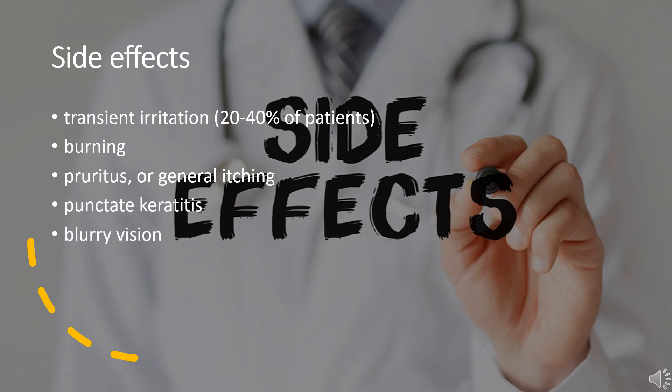Side effects: The adverse side effects of betaxolol can be categorized into local and systemic effects. The local effects include transient irritation in 20–40% of patients, burning, pruritus or general itching, punctate keratitis, and blurry vision.